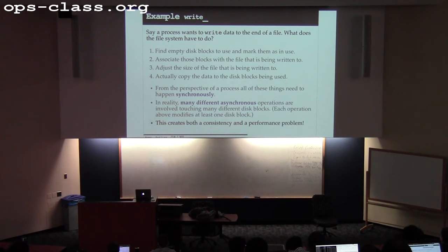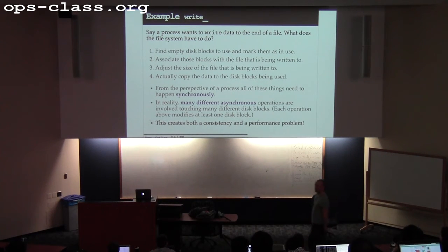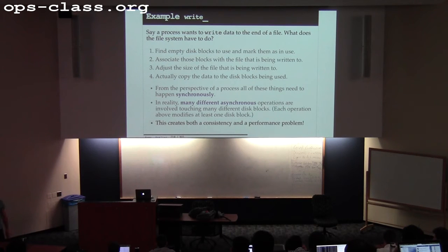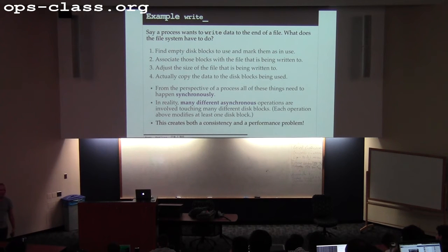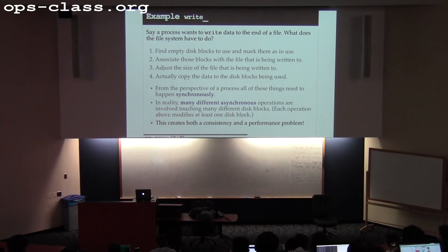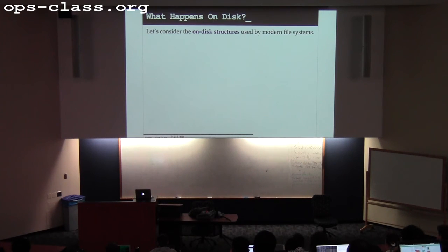This creates two problems: consistency and performance. I've got to touch three or four different spots on the disk. On a spinning disk, that means seeking all over the place — it's slow. The disk has to race over here to do one thing and then race back to do another. And other things are idle waiting for this to happen. So this is a significant performance challenge on top of the consistency challenge.